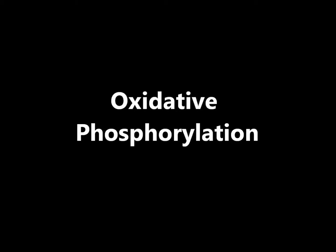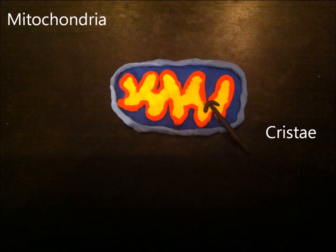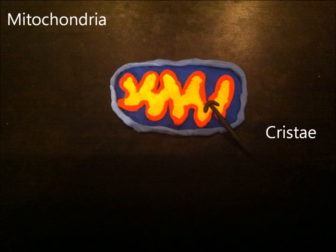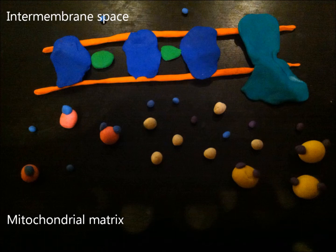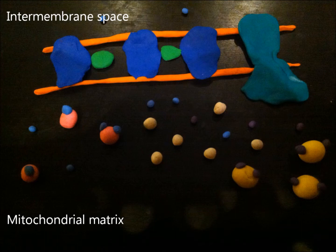Oxidative phosphorylation. This occurs in the mitochondrial cristae which uses an electron transport chain. All the NADH and FADH2 produced in glycolysis, pyruvate oxidation, and the Krebs cycle are gathered at the electron transport chain for oxidation.